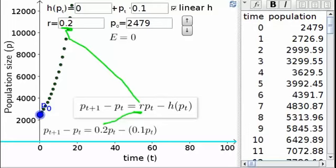The population decreases due to harvesting at rate h. The harvesting rate can depend on the population size, so it is written as a function of the population size, p sub t.